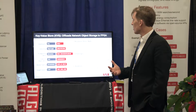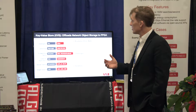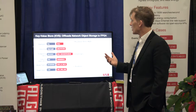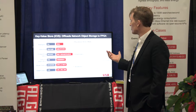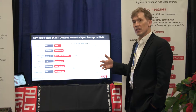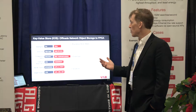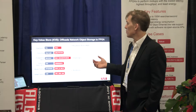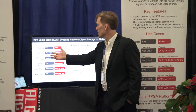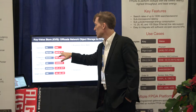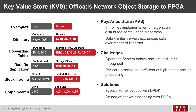The key value store is an application that offloads network object storage to FPGA. These key value pairs can be really anything — they can be a directory with names and numbers, forwarding tables with IP addresses and Ethernet MAC addresses, or data deduplication with content hashes and storage block IDs.